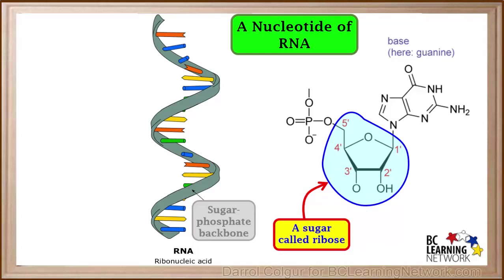So just remember, the sugar in RNA is ribose with an OH on the 2' carbon.